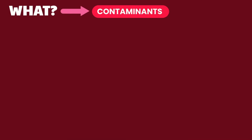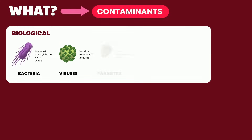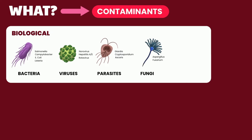Food can become unsafe when it gets contaminated. Contaminants can be biological, due to microorganisms or their products. This includes bacteria, viruses, parasites, or fungi. Some of these produce toxins that can lead to illness.